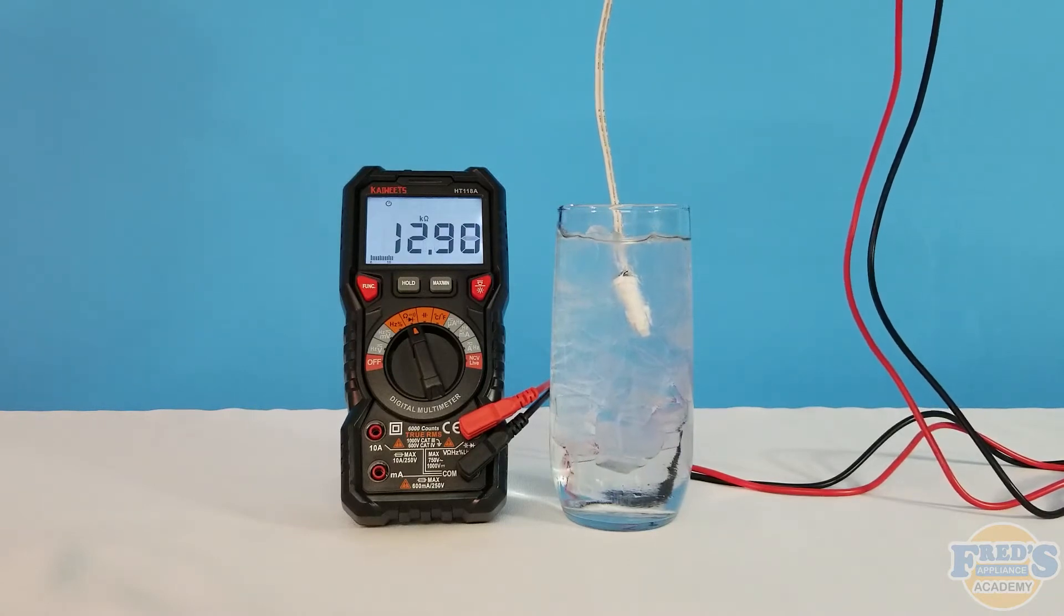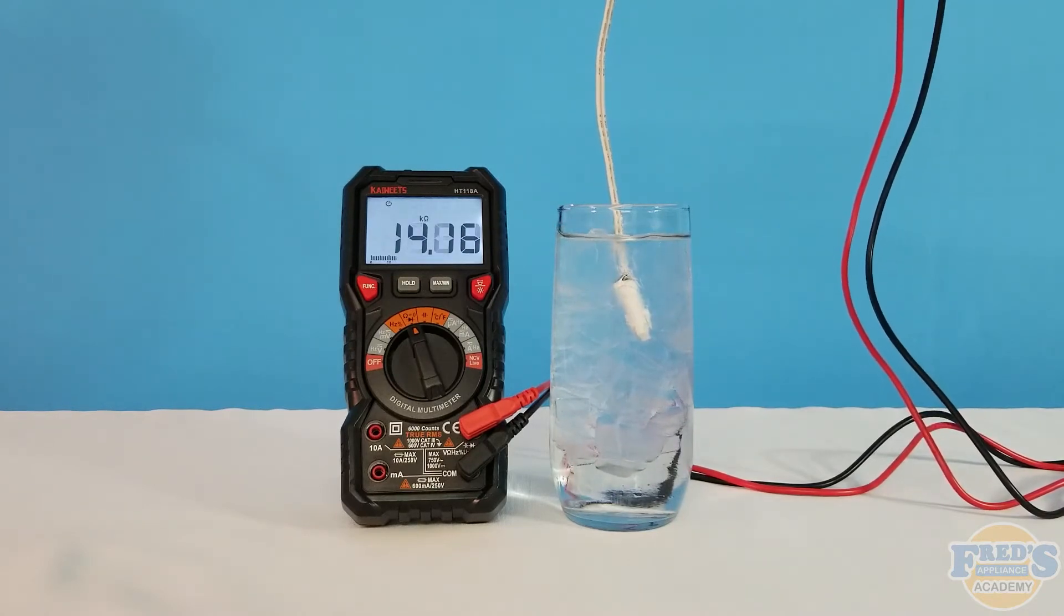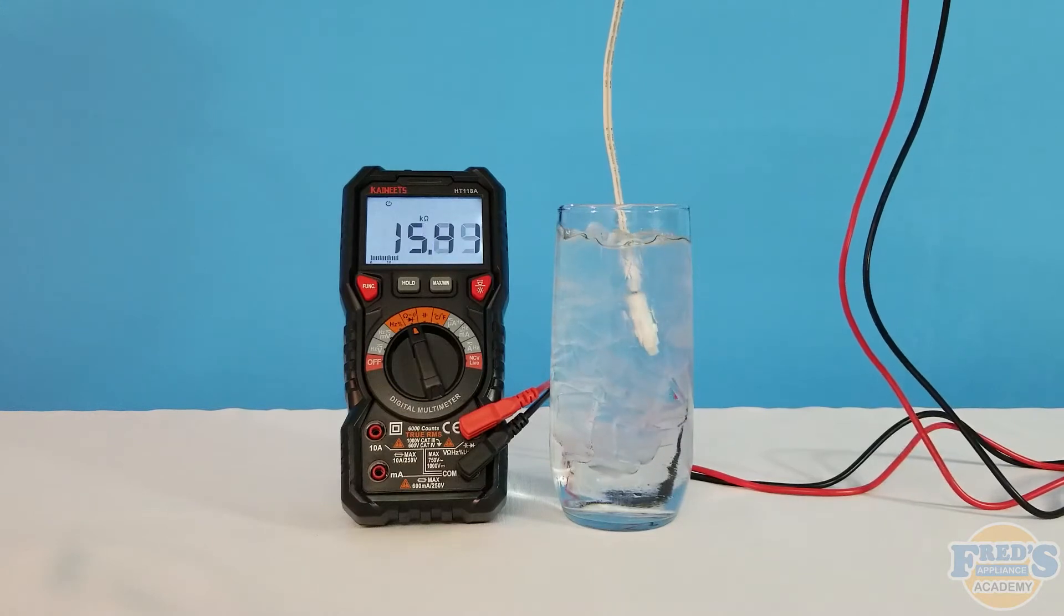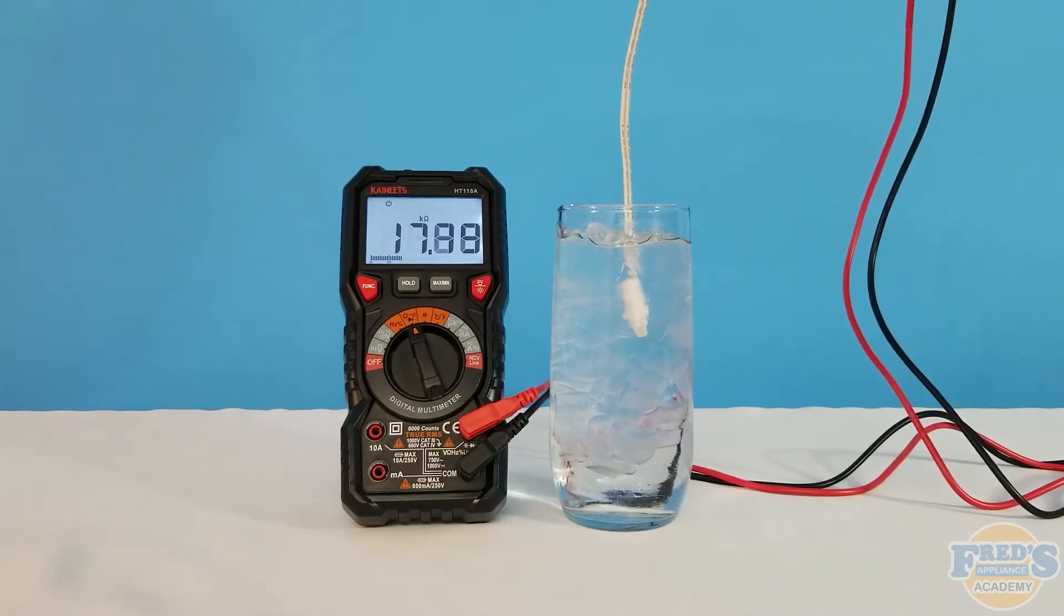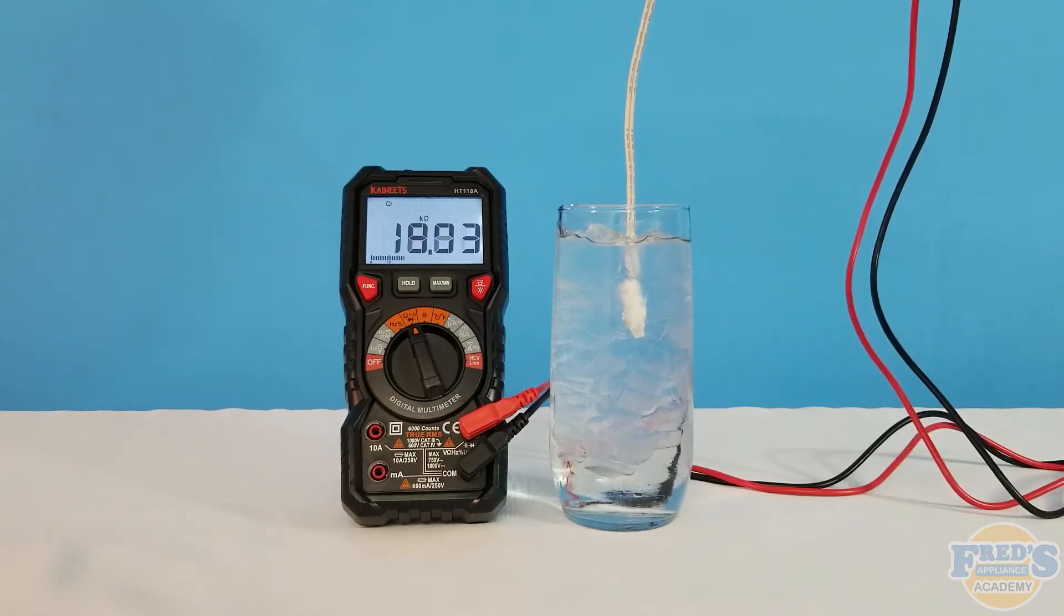If you saw my multimeter before I submerged the thermistor in the ice water it was reading about 11,000 ohms and this would be a correct reading as the current temperature in the room that I'm in is right around 73 degrees.